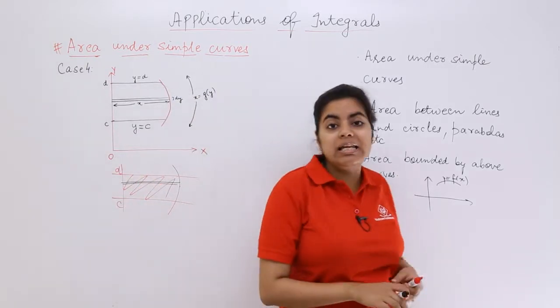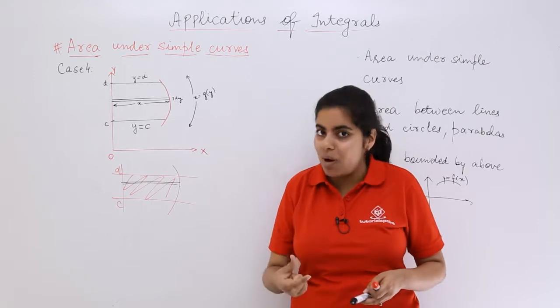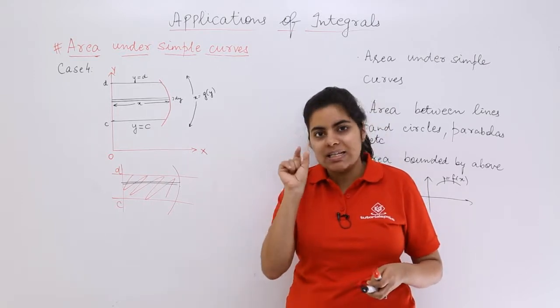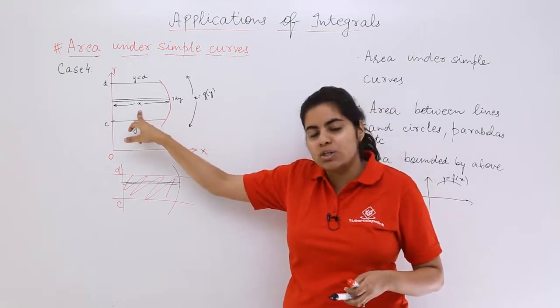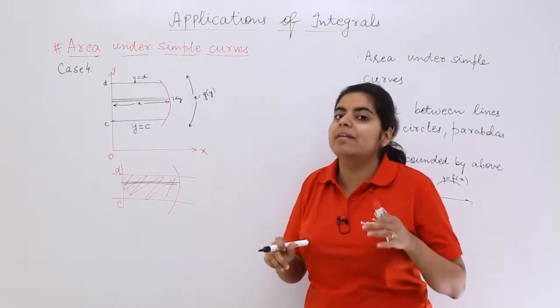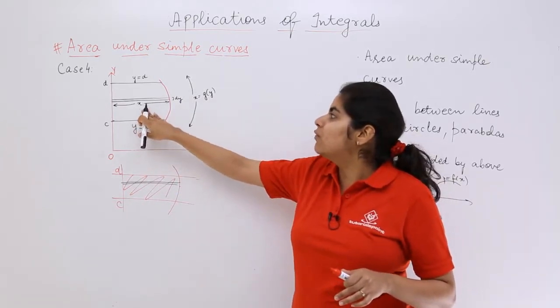Earlier we used to have the height as y and the width as dy. This time we have dy and x corresponding to it. So if one rectangle is there, whose area would be x dy.